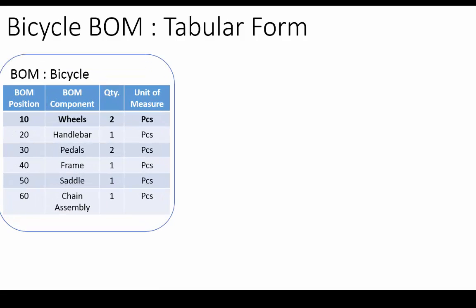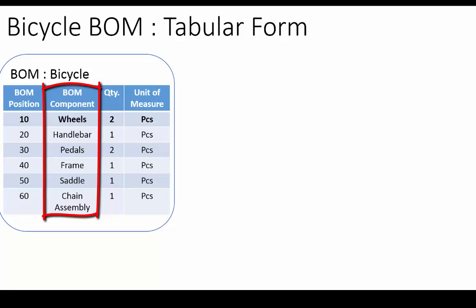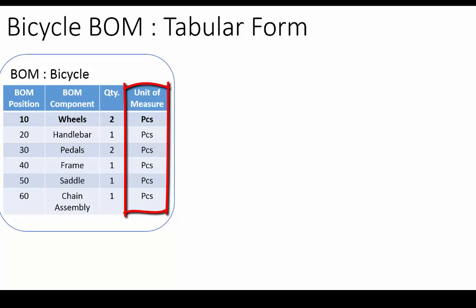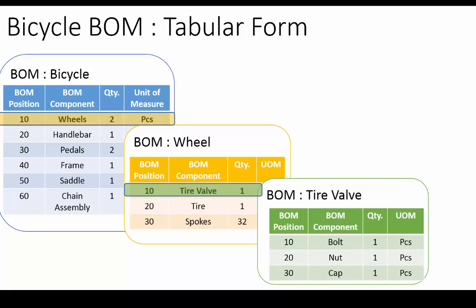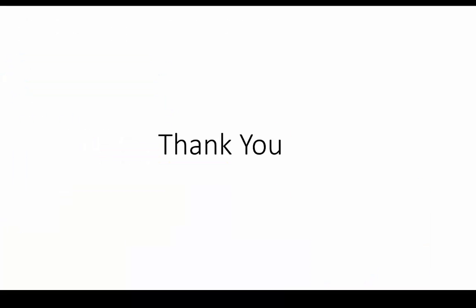BOM in Microsoft Dynamics AX is defined in a tabular form. Let us review the tabular form of our bicycle BOM. The bicycle BOM is made up from wheels, handlebars, pedals, and so on. The four important columns of the tabular form are: BOM position — the sequence in which BOM components are specified; BOM component — the product or item code and description; quantity — the quantity of each BOM component required; and unit of measure. Wheel is a sub-BOM made up from tire valve, tire, and spokes. Tire valve is made up from bolt, nut, and cap. We hope you now have a better idea about BOM, sub-BOM, BOM levels, BOM line types, and BOM version. Thank you for watching this video.